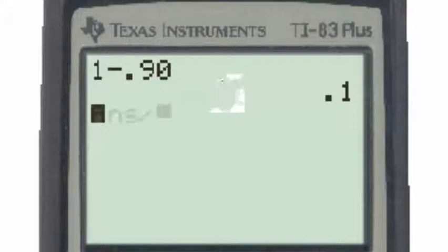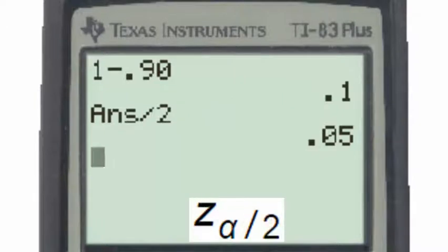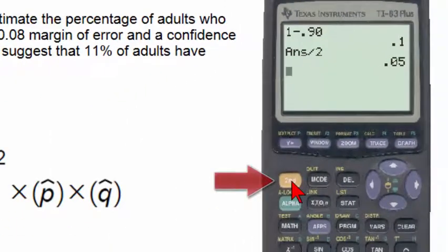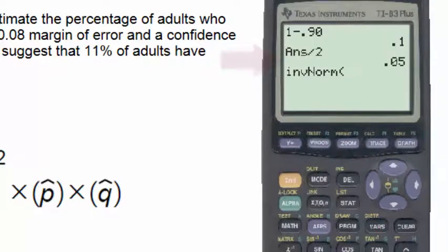Alpha divided by 2 is therefore 5 percent. To find z subscript alpha divided by 2, we'll put the alpha divided by 2 of 5 percent into the inverse normal function. Going to second, distribution, and then the number 3, we have the inverse normal function.